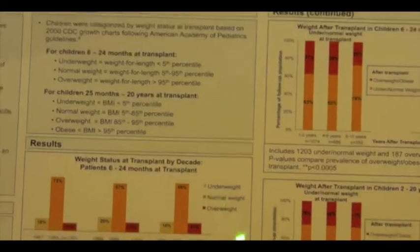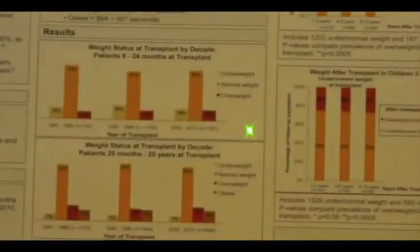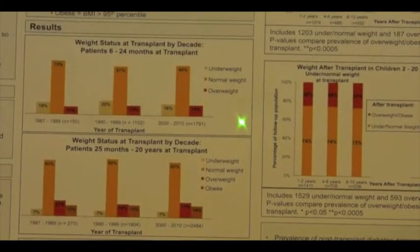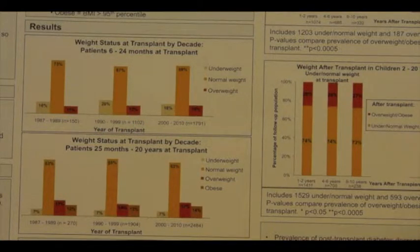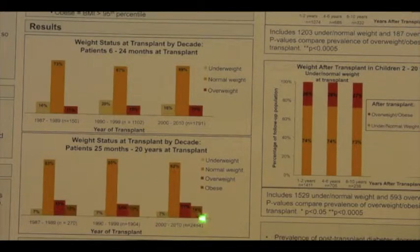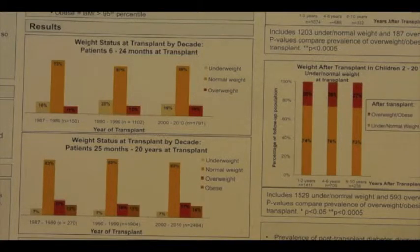We found that weight status at transplant has not changed substantially over the past three decades. For those 6 to 24 months of age at transplant, approximately 10 to 15 percent were overweight at transplant. For those 2 to 20 years at transplant, approximately 25 to 30 percent were overweight or obese at transplant. This consistency across decades held when we categorized children into five-year intervals or by diagnostic categories.